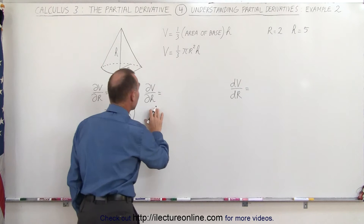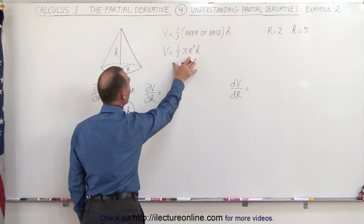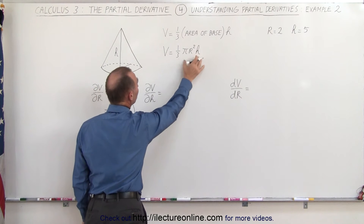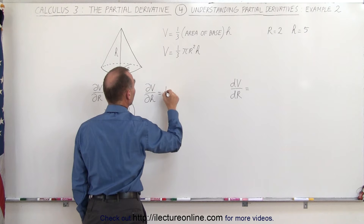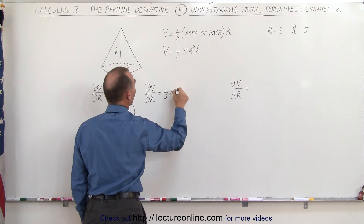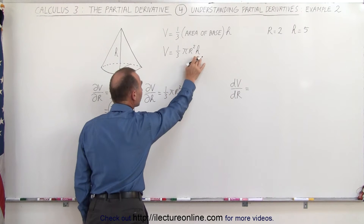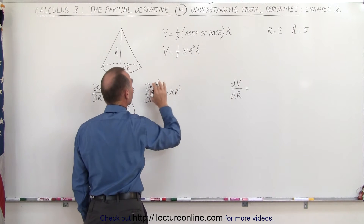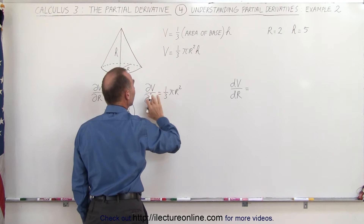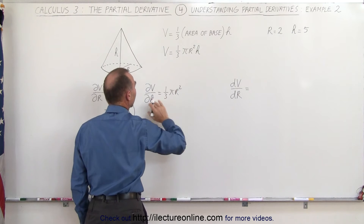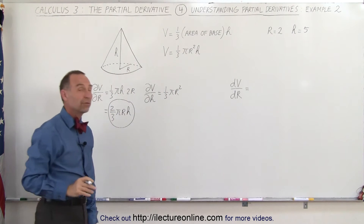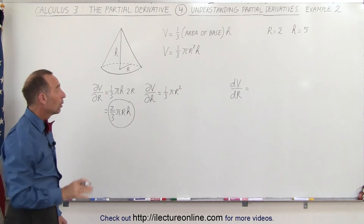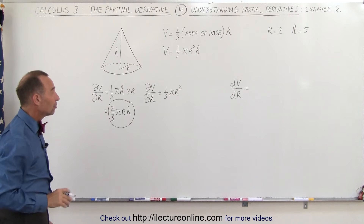We take the partial derivative of the volume with respect to h, which means one-third pi r squared becomes constant — one-third pi r squared. Only h is the variable, and the partial of h with respect to h is simply 1. Therefore, one-third pi r squared is the partial derivative of the volume with respect to h.